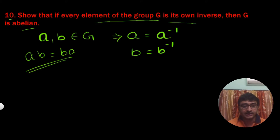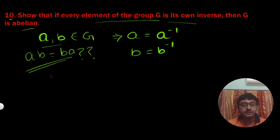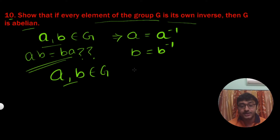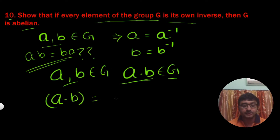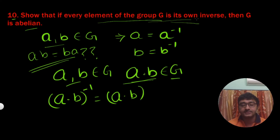If we can show this, then we can say that the group is abelian. Now, A and B both belong to G, and since G is a group, their composition A·B will also belong to G. Now this element AB belongs to G, which means the inverse of this element will also be AB, because it is given that every element of G is its own inverse. Thus we can say that AB inverse is equal to AB.